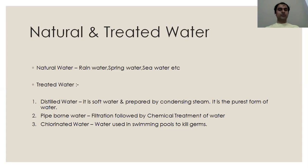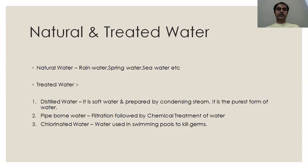Pipe-borne water is the water we get through our tap — tap water supplied by the corporation, prepared by filtration followed by chemical treatment of water. Chlorinated water is water used in swimming pools to kill germs.